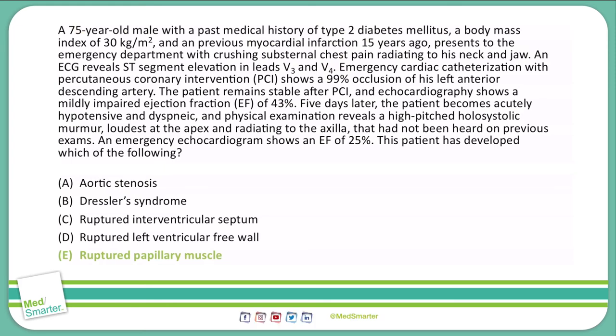This also explains our reduced ejection fraction, as the left ventricle is pumping blood back into the left atrium rather than forward. We're also seeing dyspnea, which is a classic sign of pulmonary edema due to mitral regurgitation. The answer is not a ruptured left ventricular free wall, because that typically leads to tamponade. And a ruptured intraventricular septum would lead to a left-to-right shunt.